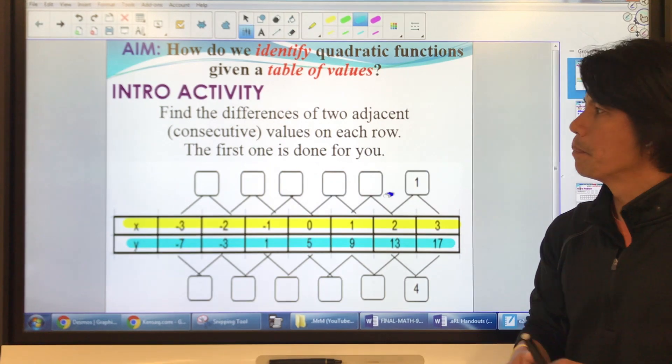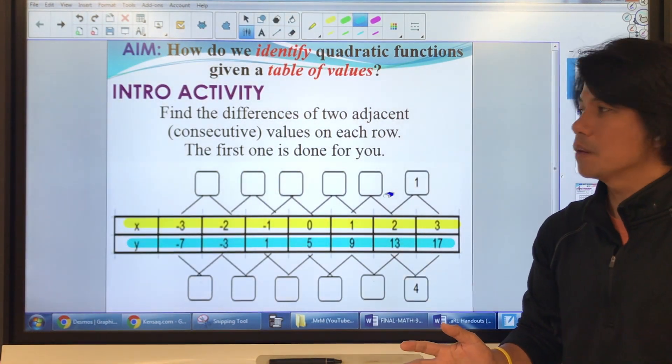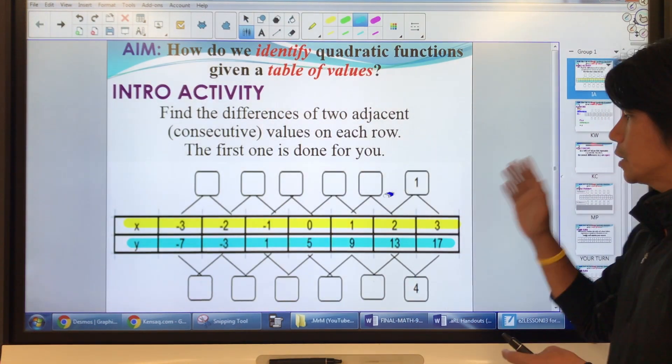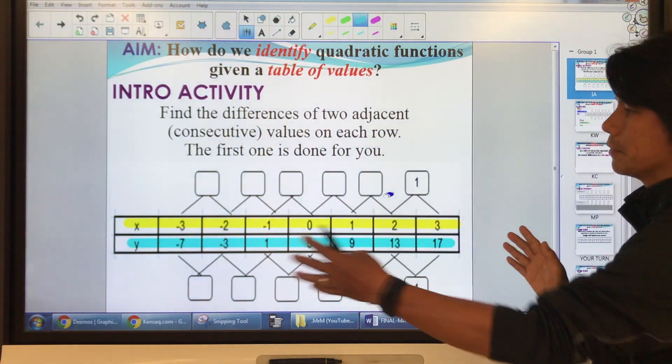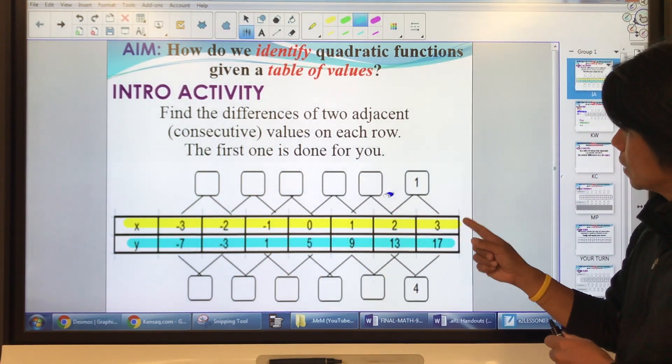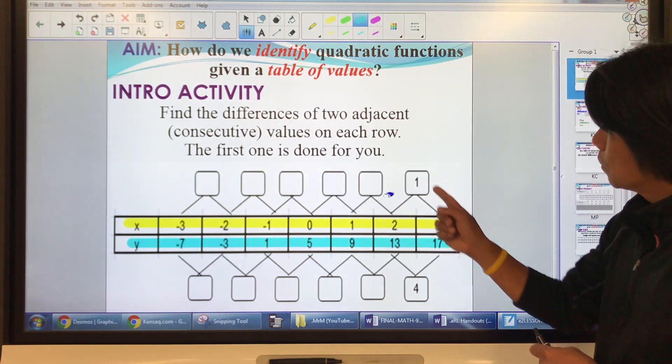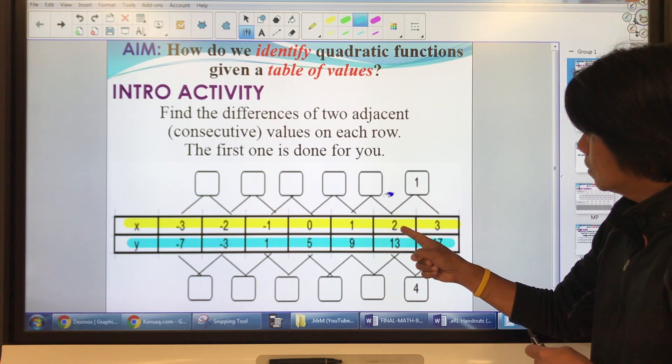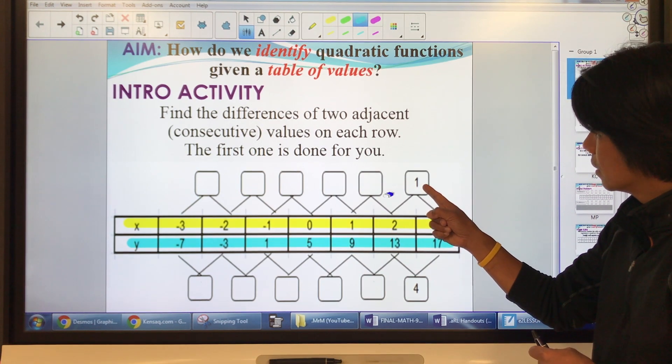So what do we need to do? When you're given a table of values and you want to find the differences, you start from right to left. In this case, when we say differences, you subtract 3 minus 2 and that is 1.